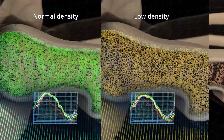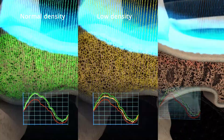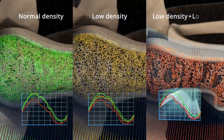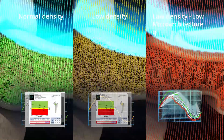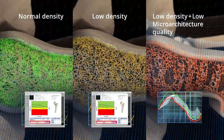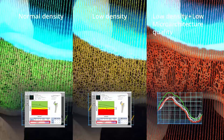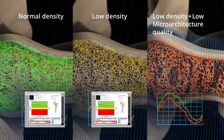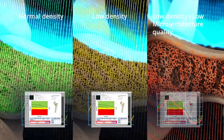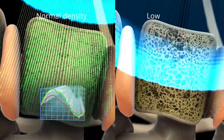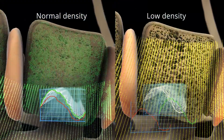ECOs, with an easy and quick examination, quantitatively assesses bone density and the quality of microarchitecture, providing an accurate estimation of the fracture risk.